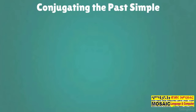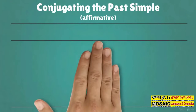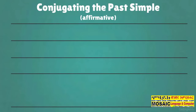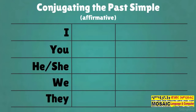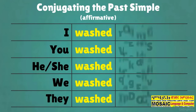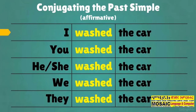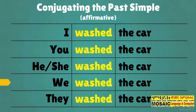Conjugating the past simple affirmative: I washed the car, you washed the car, he washed the car, she washed the car, we washed the car, they washed the car.